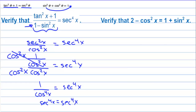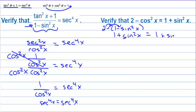On the other one, verify that two minus cosine squared is equal to one plus sine squared. Let's pick the left side. We can write two minus cosine squared as one minus sine squared of x, then two minus one is one, and minus minus is plus sine squared x. And that is the same as one plus sine squared x. Some of these require several steps; some are just one or two.